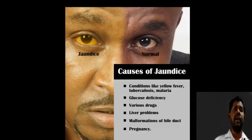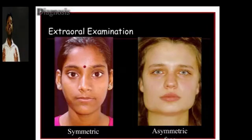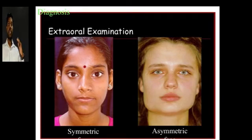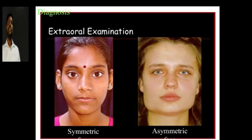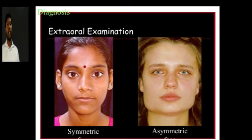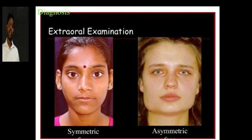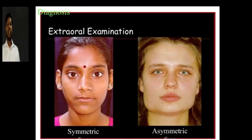After finishing general examination, we proceed to the oral cavity — starting with extra-oral then intra-oral. In extra-oral examination, the first point is facial symmetry. Unless the patient has developmental disorders, bone problems like cherubism, Paget's disease, osteoarthritis, abscess, or fracture, the patient will usually have bilateral facial symmetry.